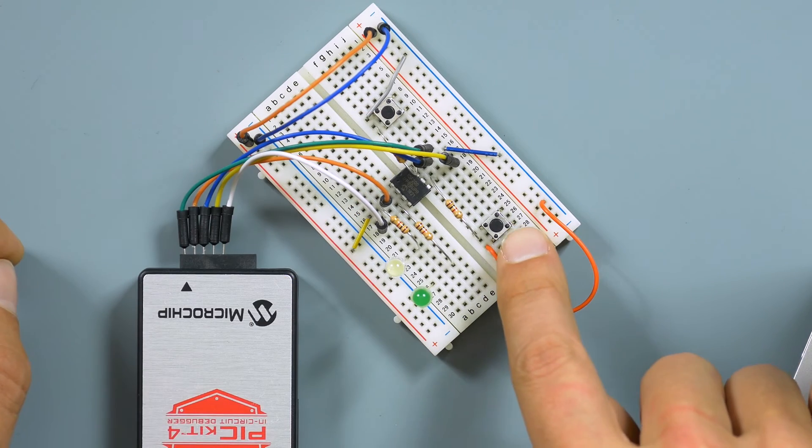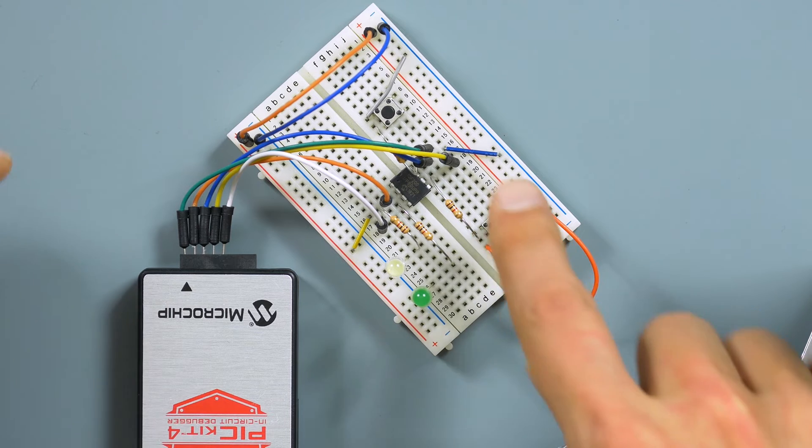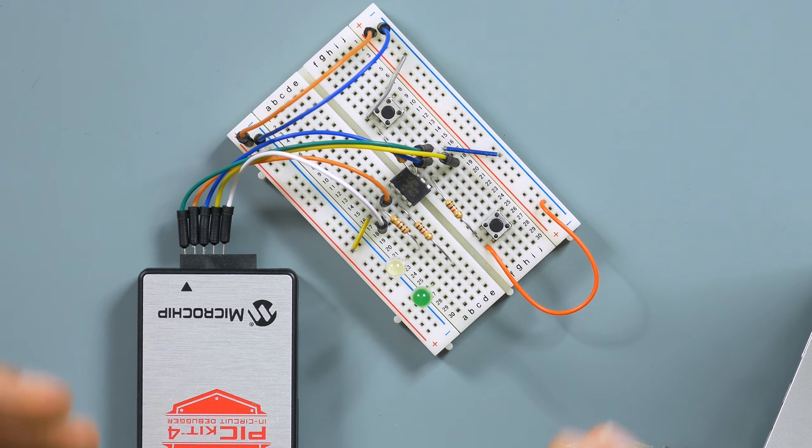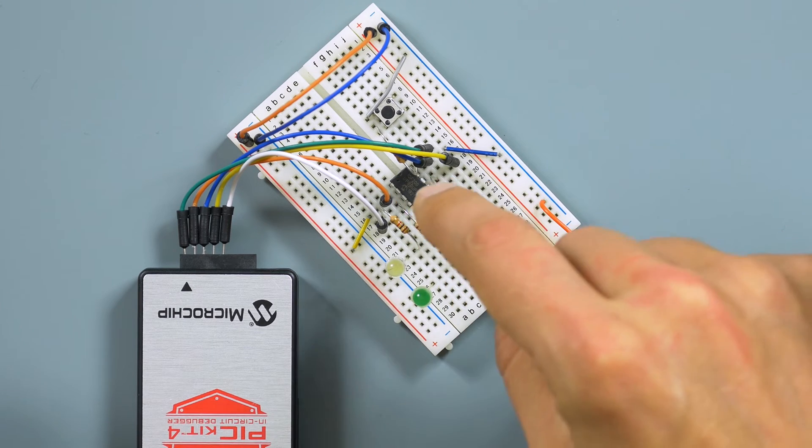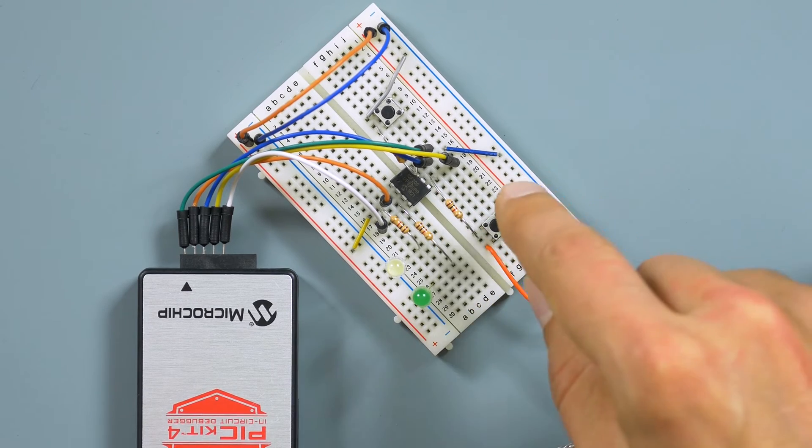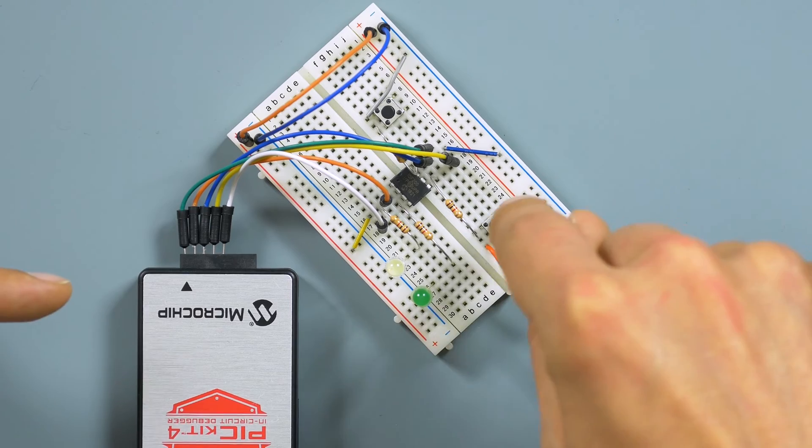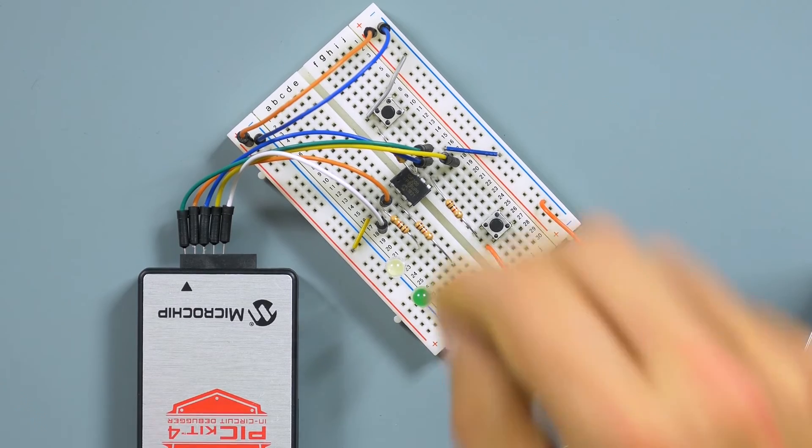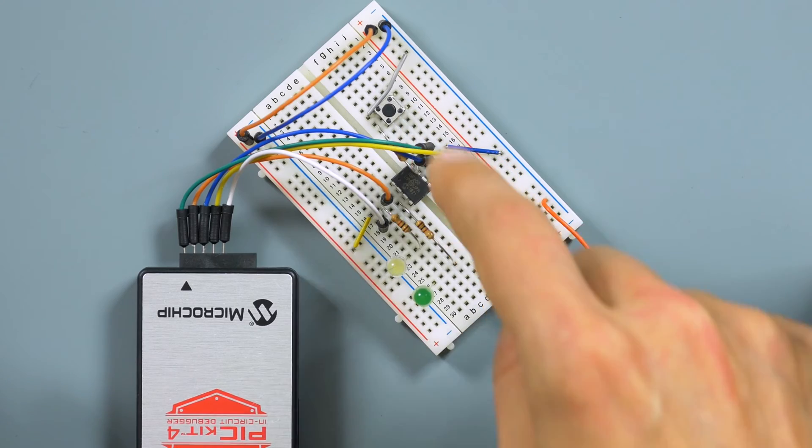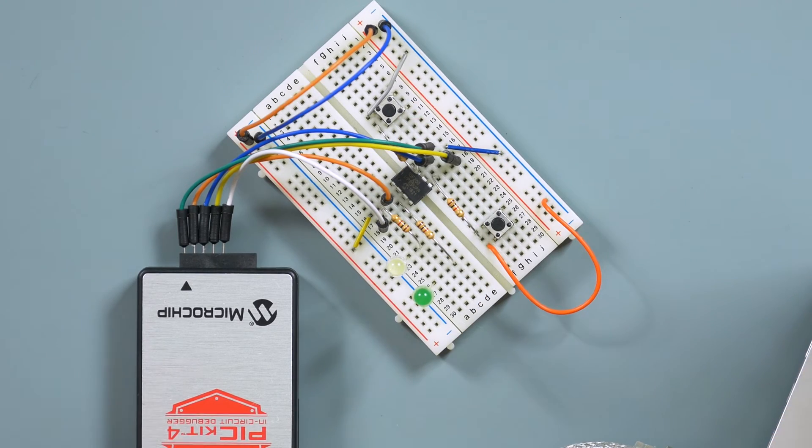The reason we have resistors on these switches is just in case you set it up wrong or you have it set up as an output instead of an input, which is what you're going to want whenever you use a switch. If you push the button and it goes straight to ground, that means your five volts going straight to ground, you're going to short it and blow that pin. So I put these resistors in there just to keep things safe.